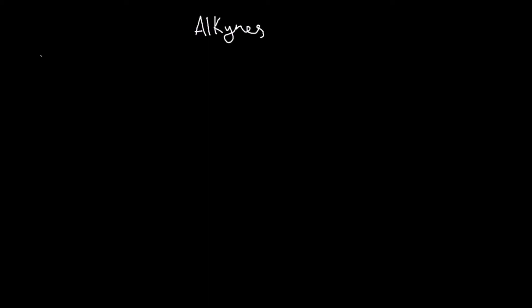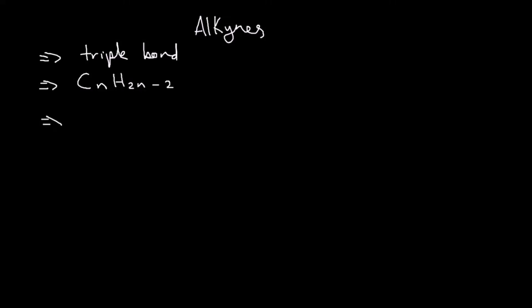Now we're going to talk about alkynes. Their functional group is that they contain a triple bond. Their general formula is CnH2n-2. Their first member is ethyne, which is drawn like this.